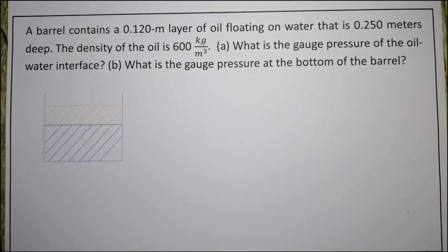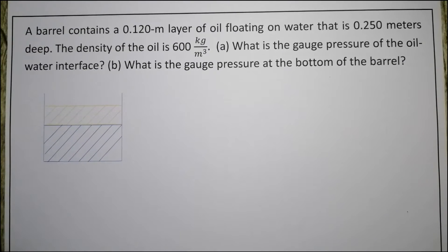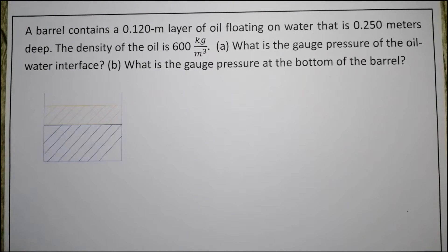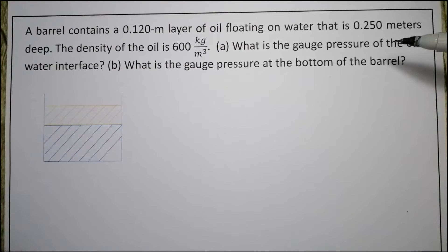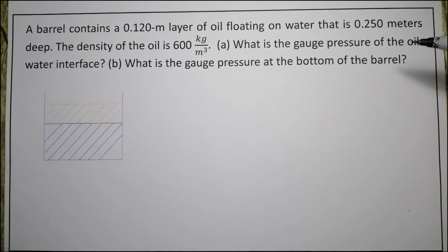A barrel contains a 0.12-meter layer of oil floating on water that is 0.25 meters deep. The density of the oil is 600 kilograms per meter cube. We need to find the gauge pressure at the oil-water interface and the gauge pressure at the bottom of the barrel.